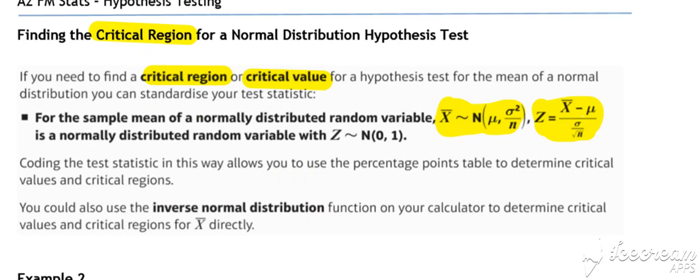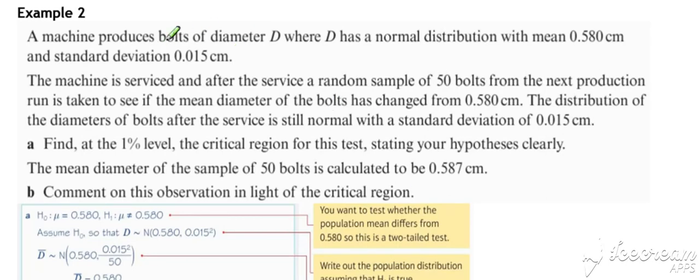Let's look at our example. Machine produces bolts of diameter D, D is normally distributed, mean of 0.58, standard deviation 0.015.